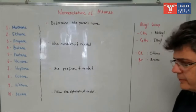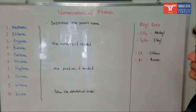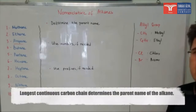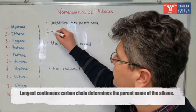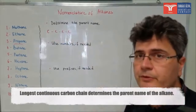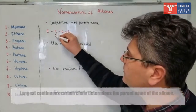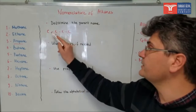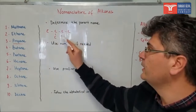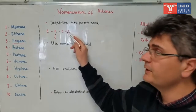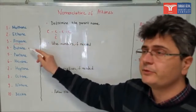Now let's see the rules. The first rule says that we need to determine the parent name. The parent name comes from the longest continuous carbon chain. For example, if you have a chain like this, the parent name is going to be butane. If you had one carbon atom added here, the parent name is not going to change, because the longest chain still has one, two, three, four carbons. Still four carbon atoms, so the parent name is still butane.